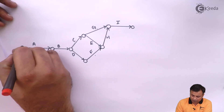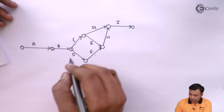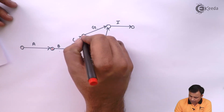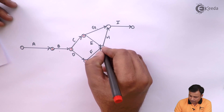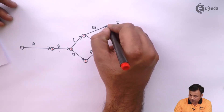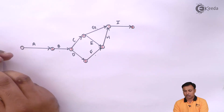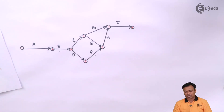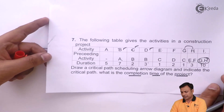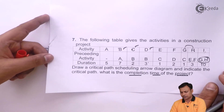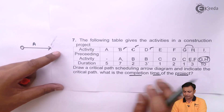Now name the nodes and then we will proceed further. My nodes are 1, 2, 3, 4, 5, 6, 7, and 8. No need to use multiple pens as a student in the answer sheet — you can write directly with a single pen or pencil.